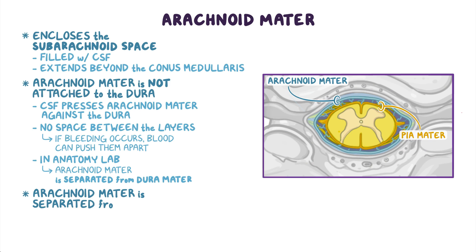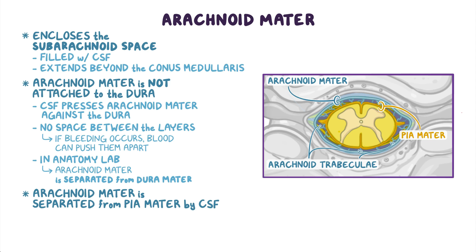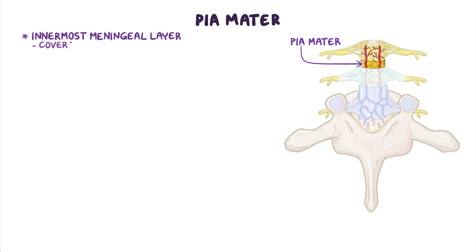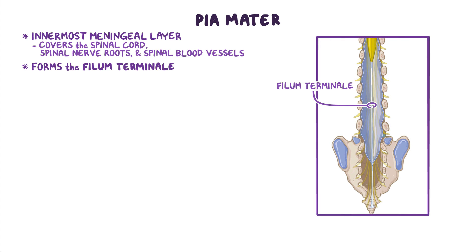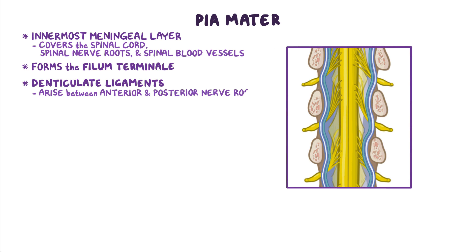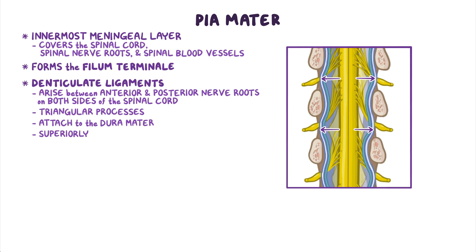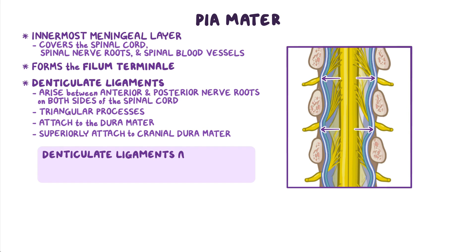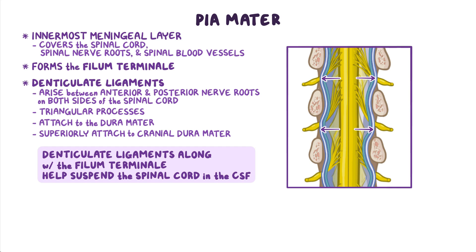The arachnoid mater is separated from the pia mater by CSF, but connective tissue strands called arachnoid trabeculae make connections between the arachnoid and pia mater through the subarachnoid space. The pia mater is the innermost meningeal layer, covering the spinal cord, spinal nerve roots, and spinal blood vessels. A fine thread of the spinal pia mater forms the filum terminale extending inferiorly from the conus medullaris. Laterally, the pia mater forms extensions called the denticulate ligaments, which arise between the anterior and posterior nerve roots and have triangular processes that attach to the dura mater. The denticulate ligaments along with the filum terminale help suspend the spinal cord in the CSF of the subarachnoid space.